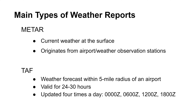METAR is an observation of the current weather at the surface and will typically originate from airports or permanent weather observation stations. TAF, on the other hand, is a weather forecast report prepared for the 5 statute miles radius around a specific airport, typically a large one. TAFs are valid for 24 or 30 hours and are updated 4 times a day at midnight, 6, 12, and 18 o'clock.